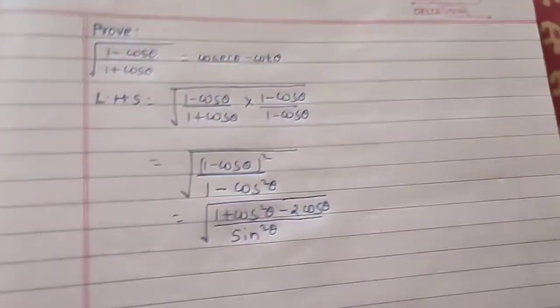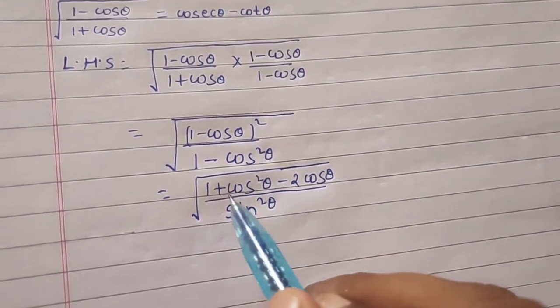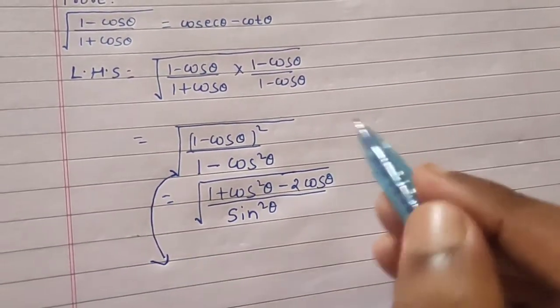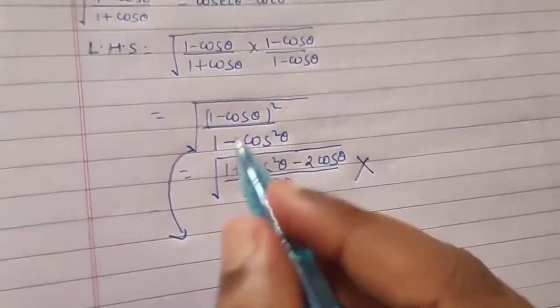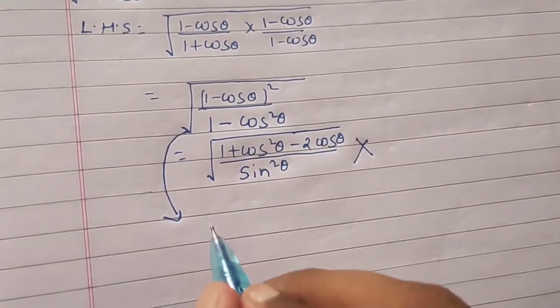Or if you don't want this, you can avoid this step. You can directly bring the 1 minus cos theta out.